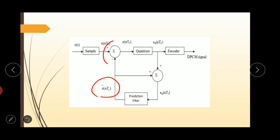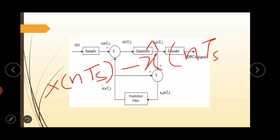Here it is used as a comparator and it finds out the difference between X of NTS minus X cap NTS. This is known as prediction error and it is denoted by E of NTS. So we can say that E of NTS equals X of NTS minus X cap NTS.